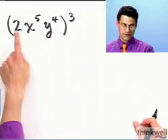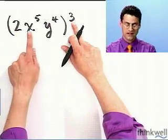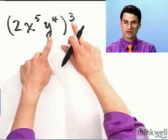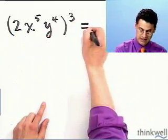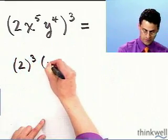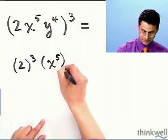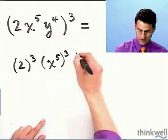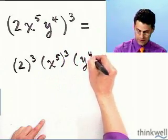So that means I first cube this term, I then cube this term, and I then cube that term. So if I were to write this out in great detail, more detail than probably you even want to see, it would be 2 cubed multiplied by x to the fifth, all cubed, multiplied by y to the fourth, all cubed.